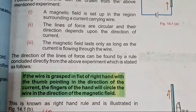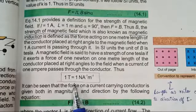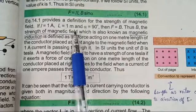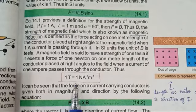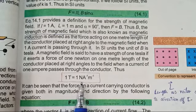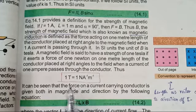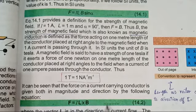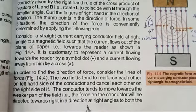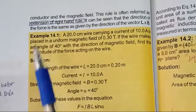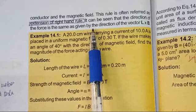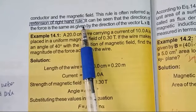Another important short question: define Tesla. One Tesla is equal to one Newton per ampere per meter. This is also an important MCQ. There is also an important one — the Tesla definition. In the last paragraph, we have studied the extension of the right-hand rule. What is the extension of the right-hand rule? This is also an important question.